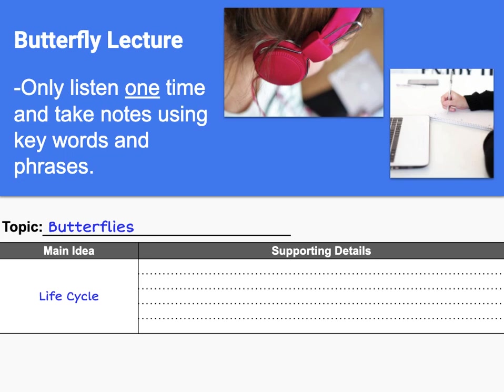Some caterpillars grow to full size within a week; others can take up to a year. When the caterpillar reaches full size, it finds a safe place and attaches itself to a branch. Its skin comes off and under the old skin is a new, hard skin called a chrysalis. Inside the chrysalis, the caterpillar is turning into a butterfly.